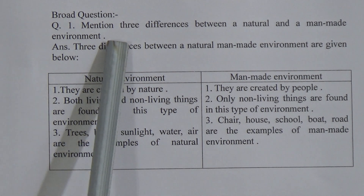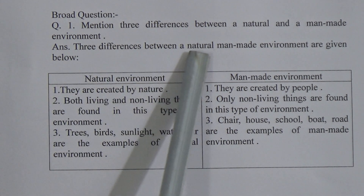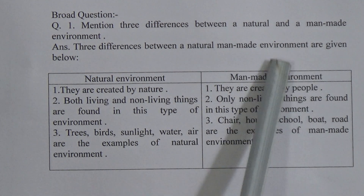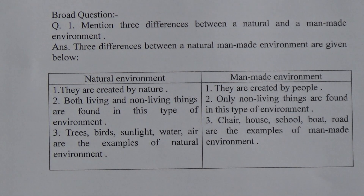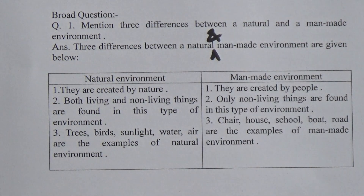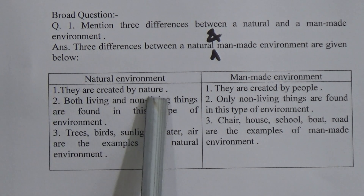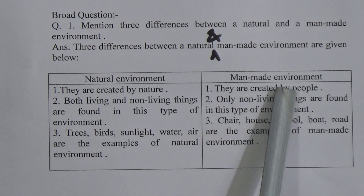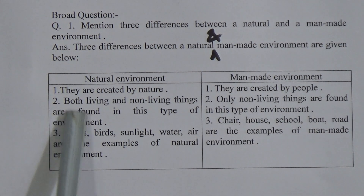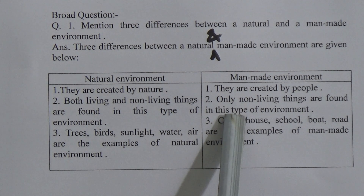Three differences between a natural and a man-made environment are given below. First: natural environment — they are created by nature; man-made environment — they are created by people. Second: in natural environment, both living and non-living things are found; in man-made environment, only non-living things are found.